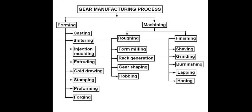Gear manufacturing processes are broadly classified into forming and machining. Forming processes include: casting, sintering, injection molding, extruding, cold drawing, stamping, preforming, and forging.